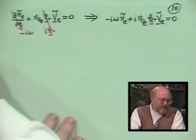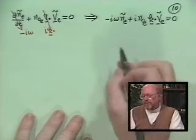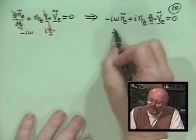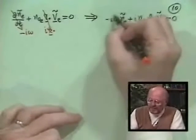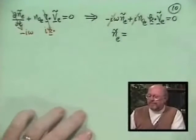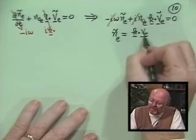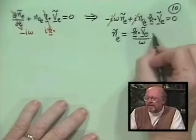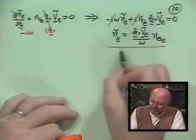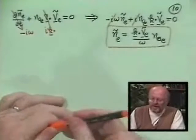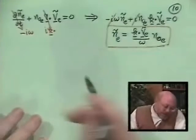It's quite convenient to solve that. So Ñ_E — I can divide through by the two factors of i and divide through by omega. What this becomes is K dot Ṽ_E over omega times N₀_E. And remember, by the original form here, this effectively says there's only a density perturbation when you have a compressibility.